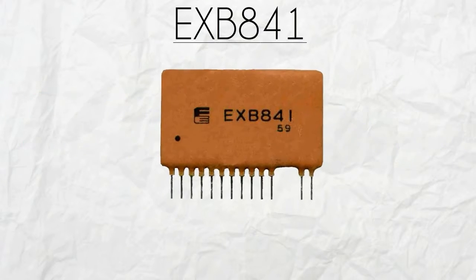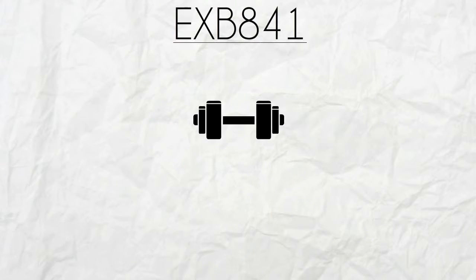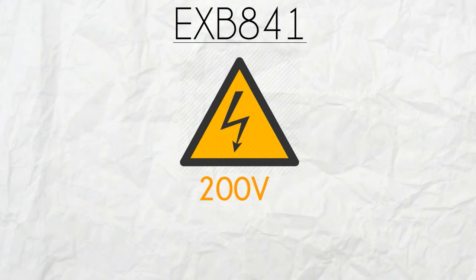Manufactured by Fuji, EXB841 is a high speed type module that weighs 5.34 pounds, with a collector emitter voltage of 200 volts and a collector current amount of 600 amps.